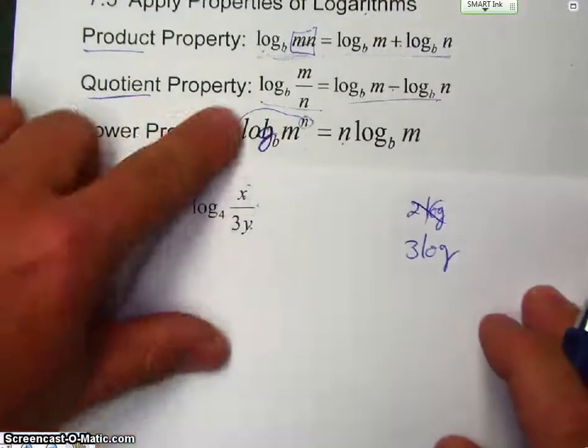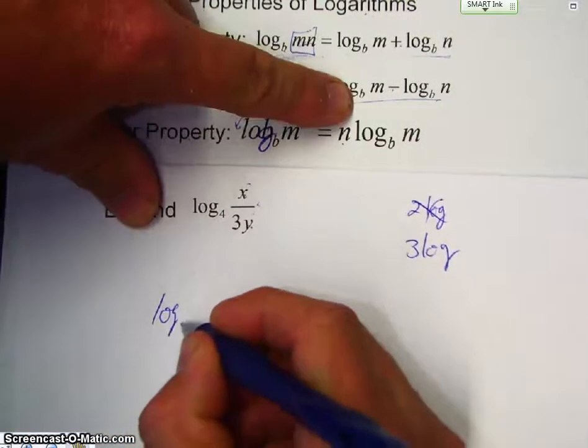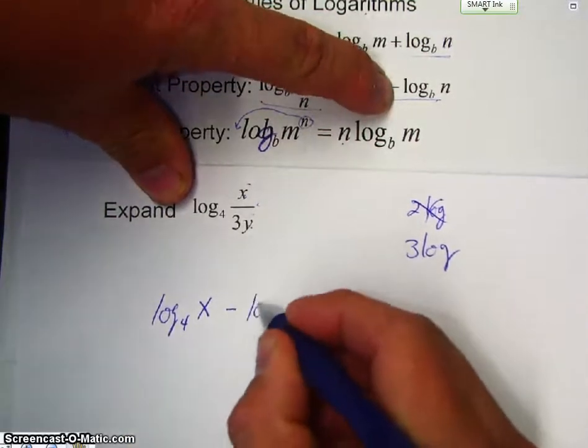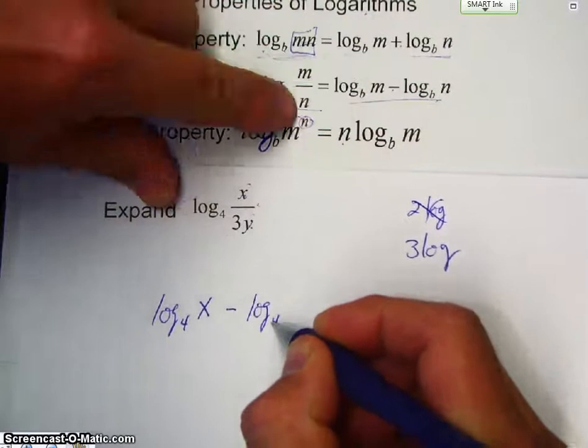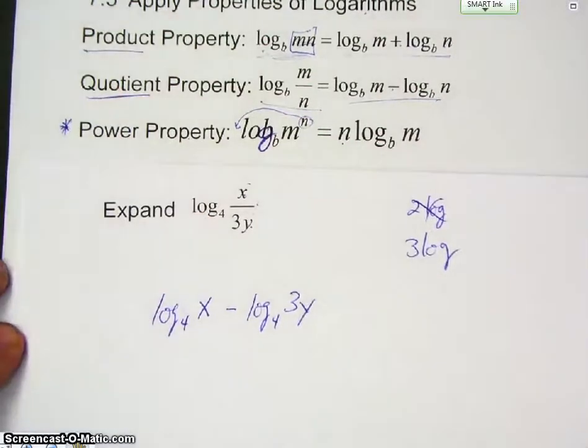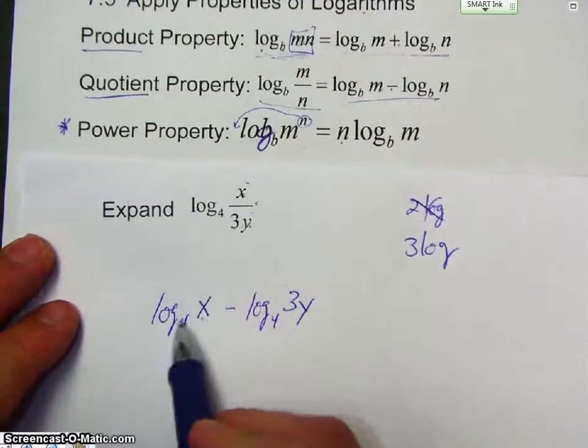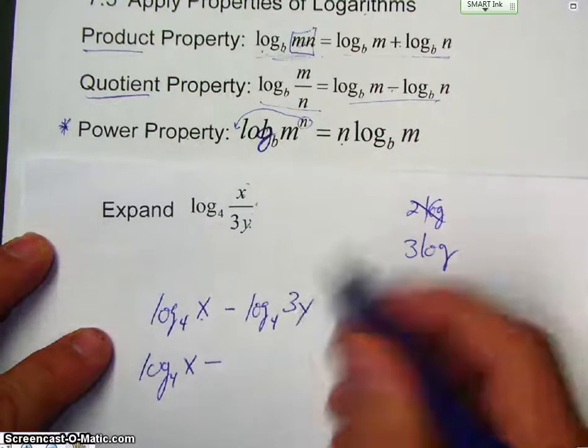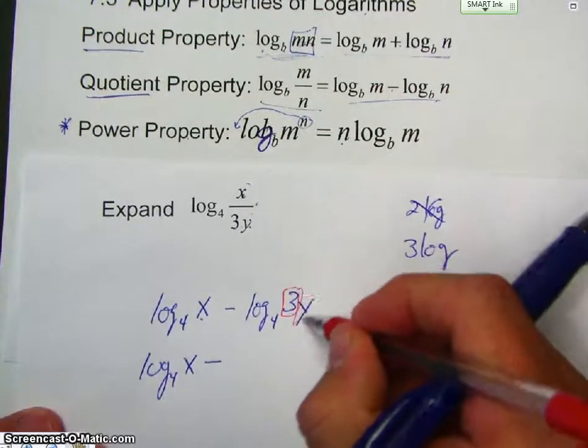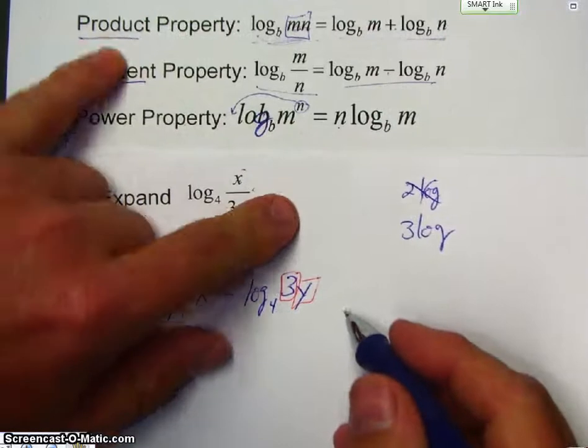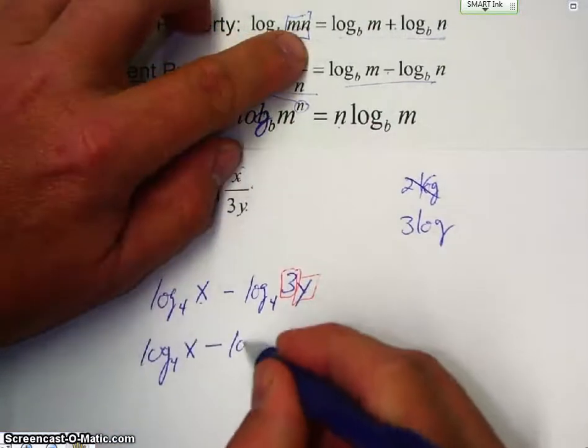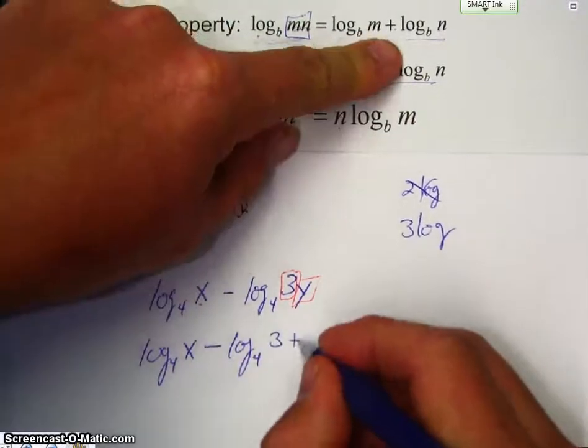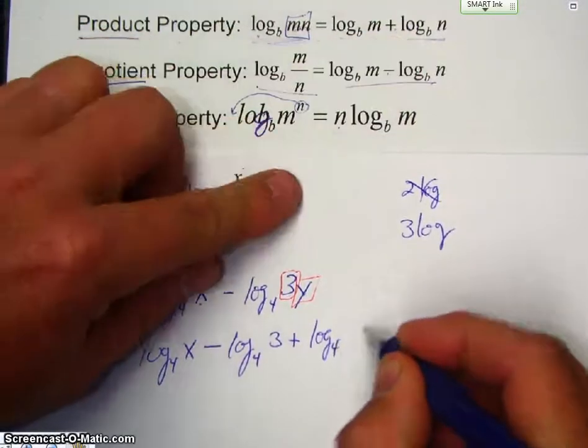So, we do the quotient first. So, the quotient means I take log of whatever the base is 4. Take the top, which is x, minus log of the same base, and the bottom, which is 3y. Now, there's only one base here. So, I just leave it alone. Now, here I got two parts. I got a 3 and a y. So, that means I'm going to get two logs from that. So, I'm using the product property. So, I'm going to take the log of 4 of 3 plus log of 4 of y.